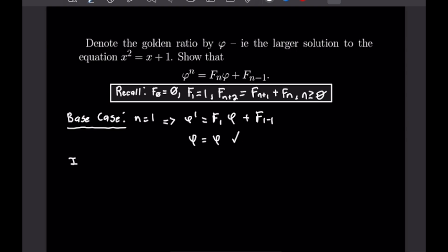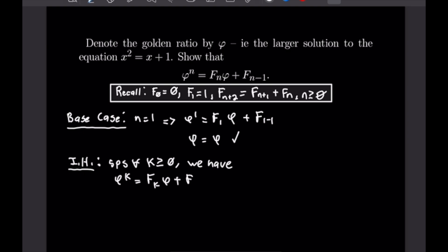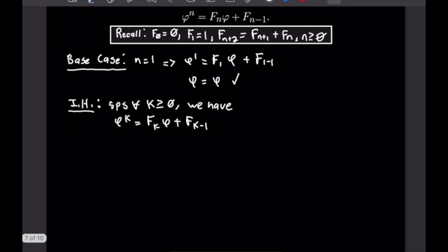For our induction hypothesis, we suppose that for all K ≥ 0, φᴷ = F_K · φ + F_{K−1}. Then we consider the next case, φ^{K+1}. We want to show that φ^{K+1} = F_{K+1} · φ + F_K.